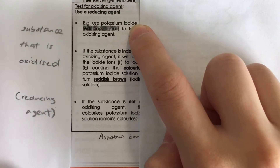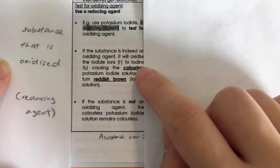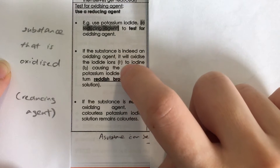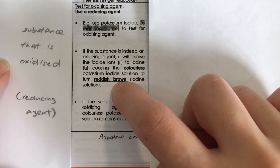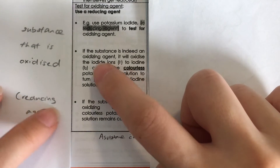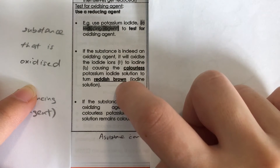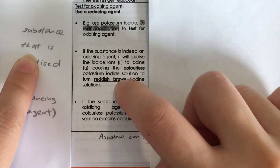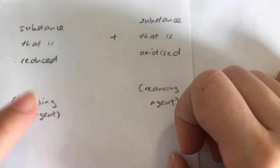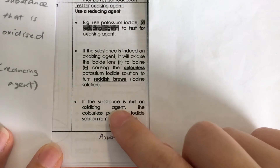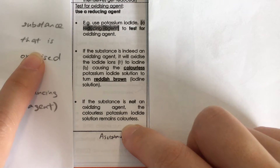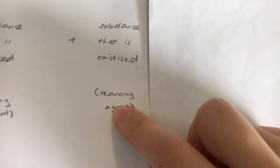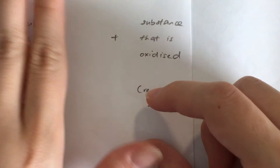What we add here is potassium iodide, and we want to see if it gets oxidized. If an oxidizing agent is indeed present, potassium iodide will turn from colorless to reddish brown. If potassium iodide turns colorless to reddish brown, it has been oxidized, which means the oxidizing agent is present. However, if potassium iodide remains colorless with no change, it did not get oxidized, so the substance is not an oxidizing agent.